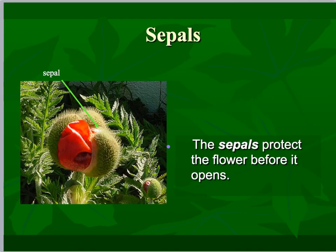The first one is the sepals. Their job is to protect the flower before opening. They're typically green — this area right back in here — so it's protecting the rose that you can see there. It also can play a role in the actual flower itself, which you'll see on the next slide.